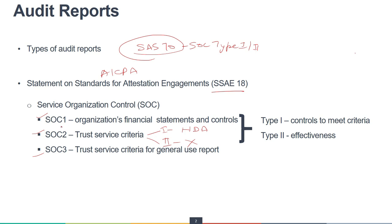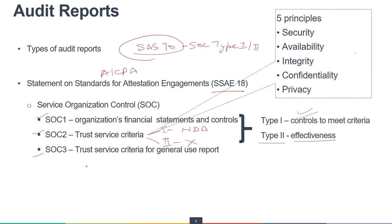What is the difference between Type 1 and Type 2 reports, which apply to both SOC 1 and SOC 2? A Type 1 report describes the controls to meet the criteria — whether you have adequate controls in place. It is a kind of compliance checklist. If you need to check the effectiveness of those controls, that is covered in the Type 2 report, which has much more detail.